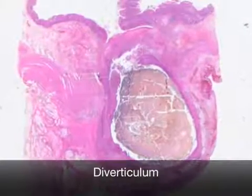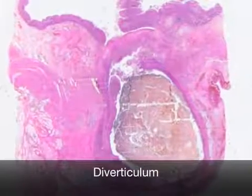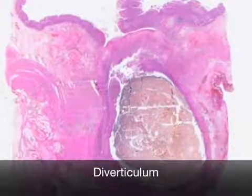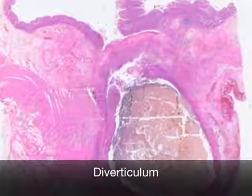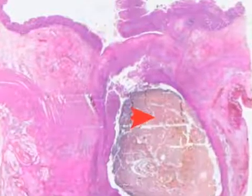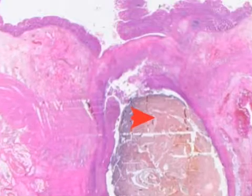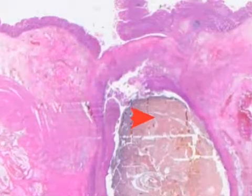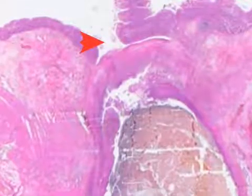Here you can see how the mucosa bulges through the bowel wall producing a diverticulum. In this case the diverticulum contains faeces, and it is easy to see how an abscess can occur when this becomes infected. You can see how narrow the neck is, causing the faeces to become trapped in the diverticulum.